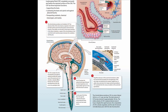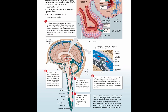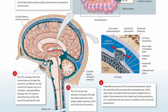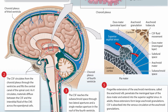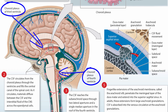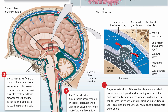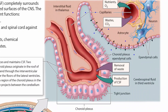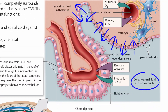Cerebrospinal fluid forms from the blood of the circulatory system as fluid squeezes out of tufts of capillaries called choroid plexuses. There is a choroid plexus within each ventricle. The CSF circulates within the ventricles and then down into the central canal of the spinal cord. As it circulates, substances diffuse between the CSF and the interstitial fluid deep inside the central nervous system.